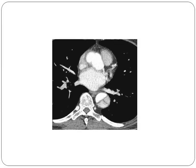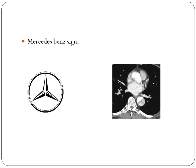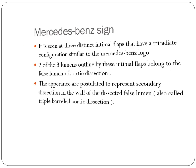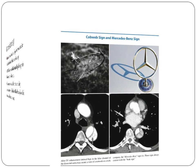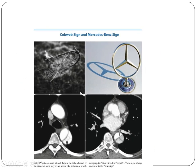Another sign is the Mercedes-Benz sign. It is seen as three distinct intimal flaps with a tri-radiate configuration similar to the Mercedes-Benz logo. Two of the three lumens outlined by these intimal flaps belong to the false lumen. This appearance is postulated to represent secondary dissections in the wall of the dissected false lumen, also called a triple-barreled aortic dissection.